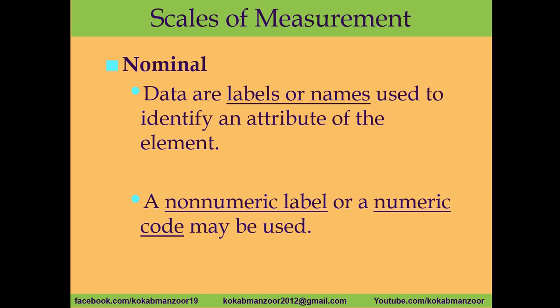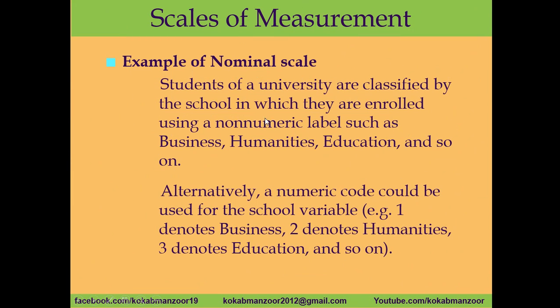You just take one category — male, female, or transgender — and we can add more categories. For example, students in a university are classified by the school in which they are enrolled using non-numeric labels: business, humanities, education, engineering, medical, etc. That is nominal data. We can also assign numbers — one to business, two to humanities, three to education, four to engineering, five to medical — but these are hypothetical numbers.